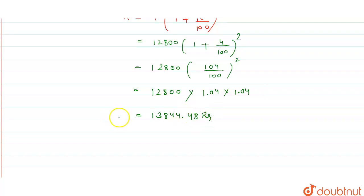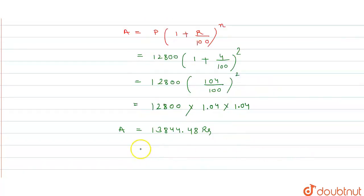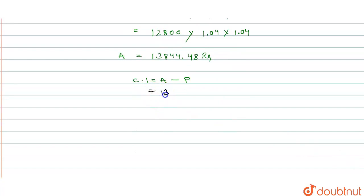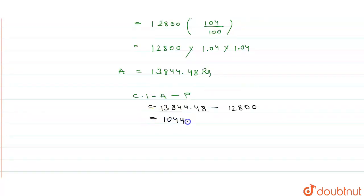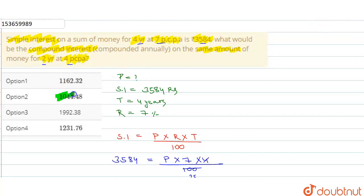तो यह हमारा amount आ गया। लेकिन हमें interest चाहिए। CI = Amount − Principal = 13,844.48 − 12,800 = 1,044.48 रुपये। So this is the required compound interest when interest is calculated annually. Option में check करते हैं — हमारा interest है 1,044.48, that is option 2 is the right answer. Thank you.